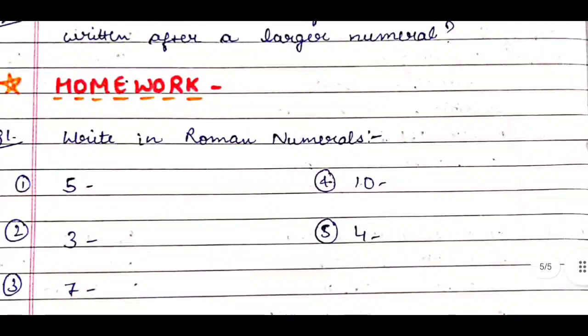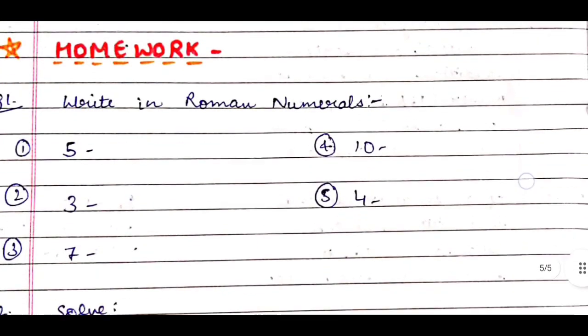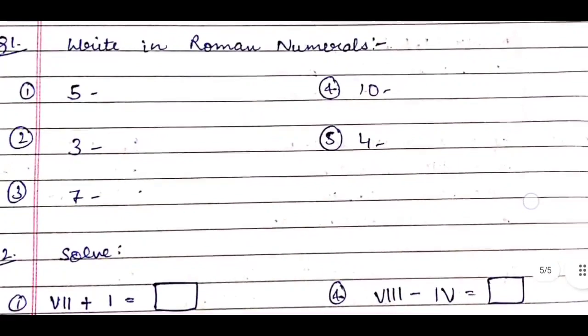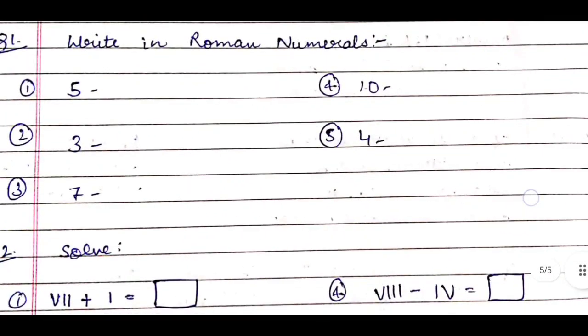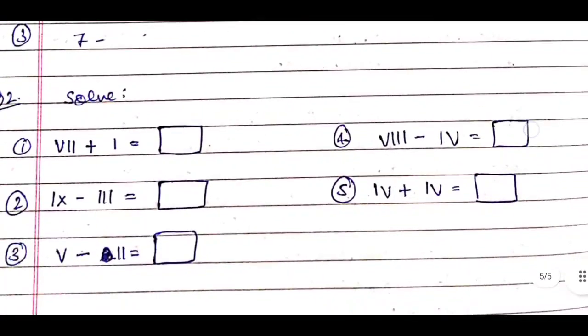Then comes homework part. First question: Write in Roman numerals, and we will write these numbers—5, 3, 7, 10, and 4. Then we will ask them to solve these equations.